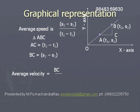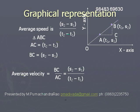By drawing a horizontal line parallel to the x-axis as AC and another vertical line BC, these two lines meet at C, forming a right angle triangle ABC. Here, AC represents the time interval t2 minus t1, and BC represents the distance travelled s2 minus s1. Hence, average speed is BC divided by AC, or (s2 minus s1) divided by (t2 minus t1). Like this, we can calculate the average speed from the graph.